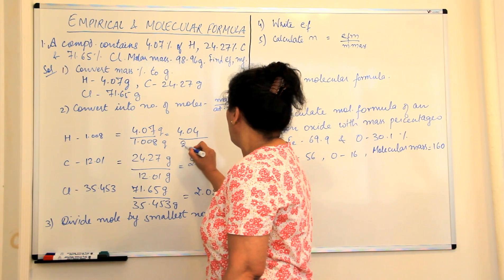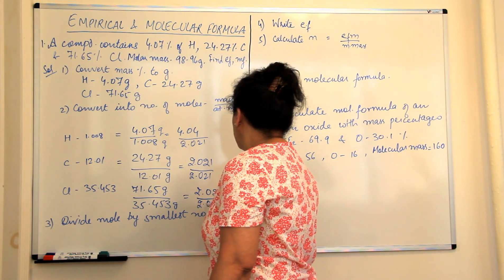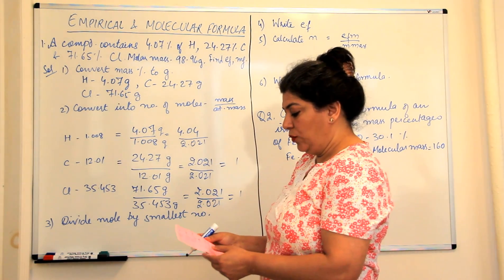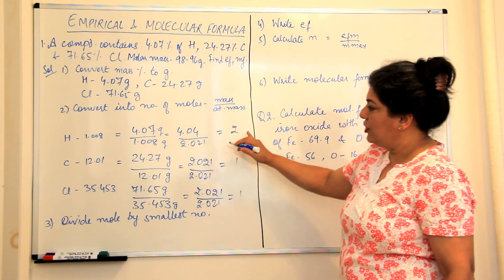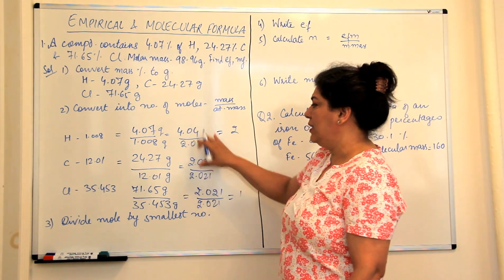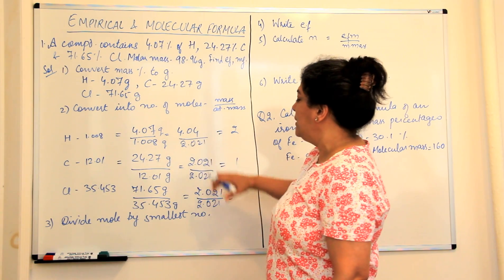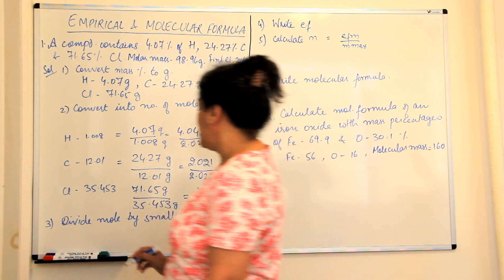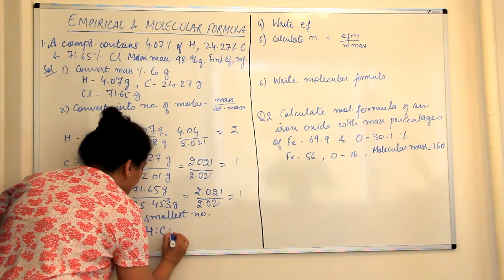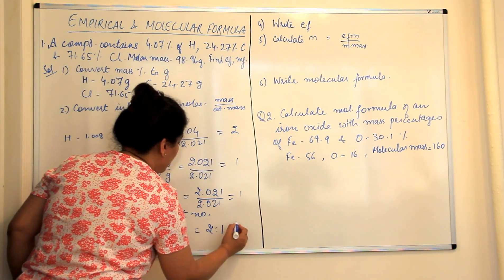So we divide each value — 4.04, 2.021, and 2.021 — all by 2.021. The carbon and chlorine values equal 1 each, and hydrogen becomes 2. We divided all three values by the same number so that the ratio is preserved, giving us the minimum ratio. The ratio of hydrogen to carbon to chlorine is 2 to 1 to 1.